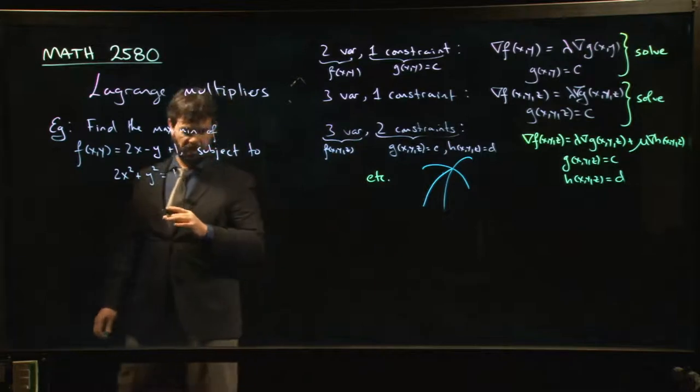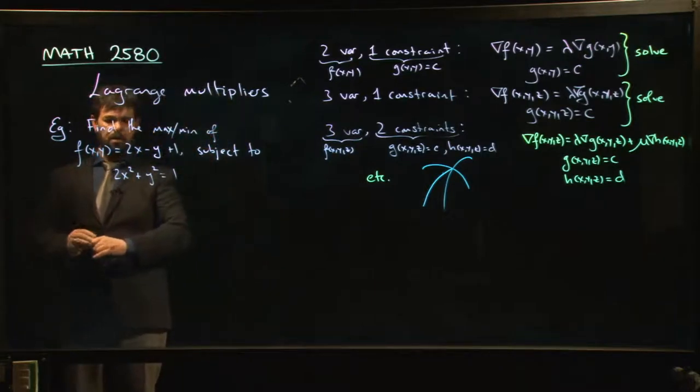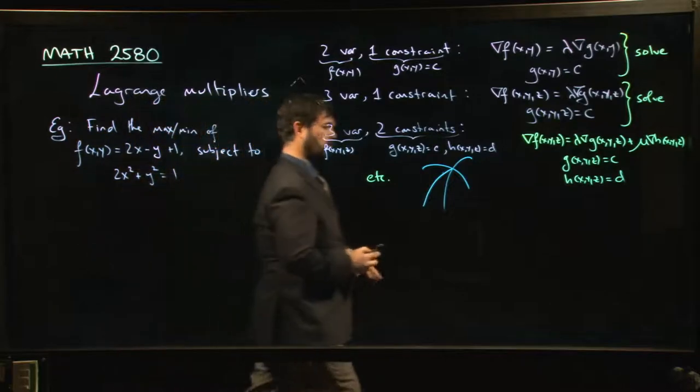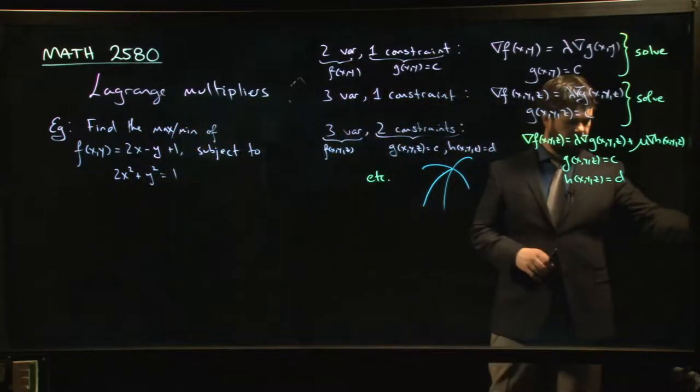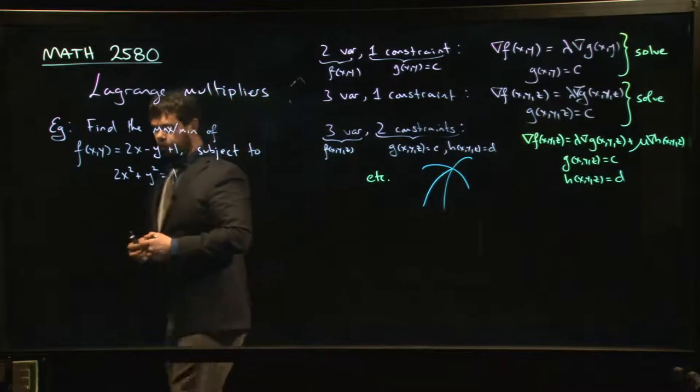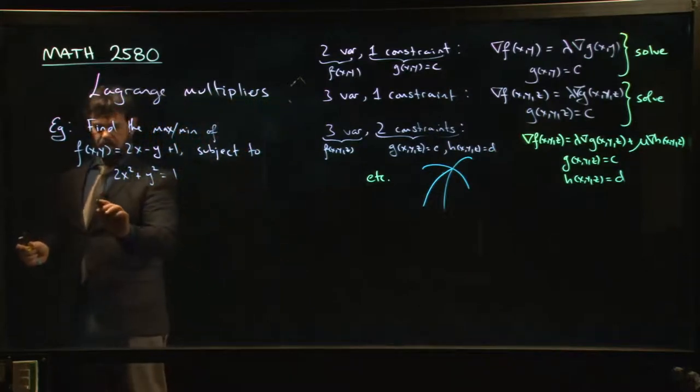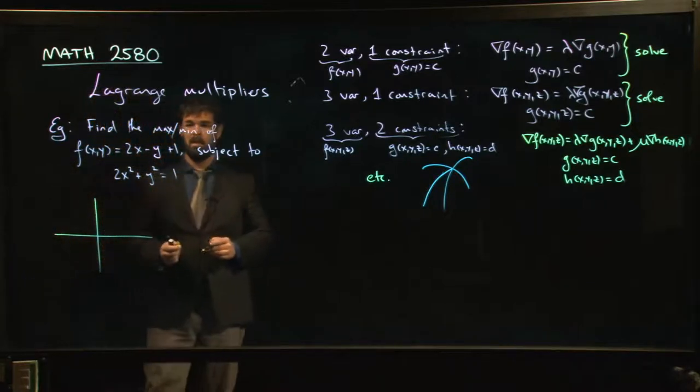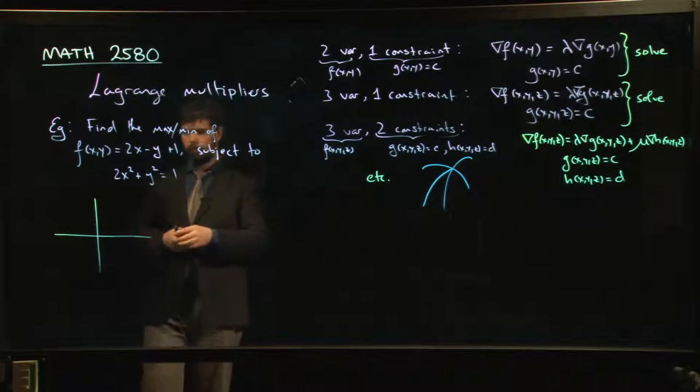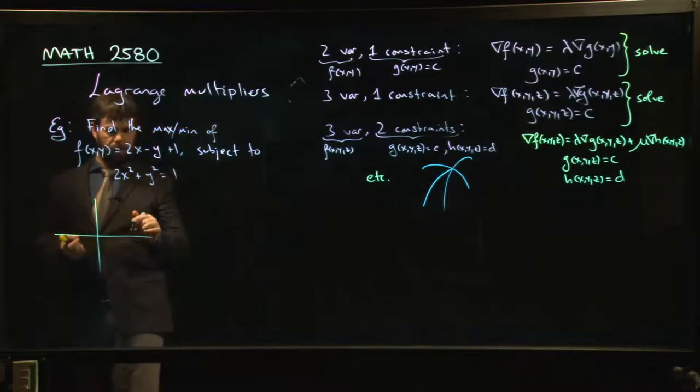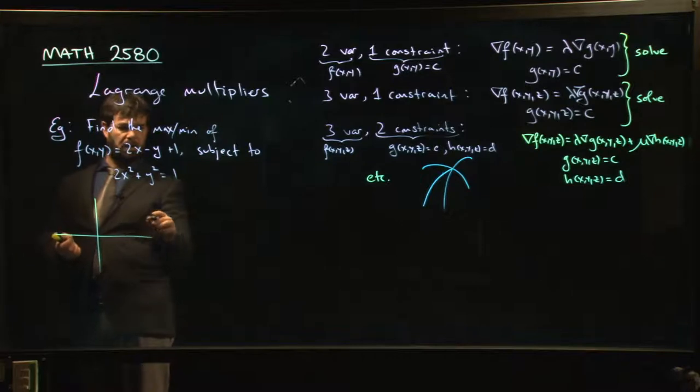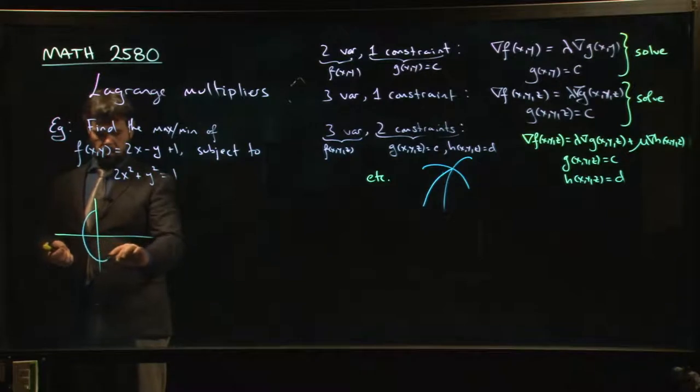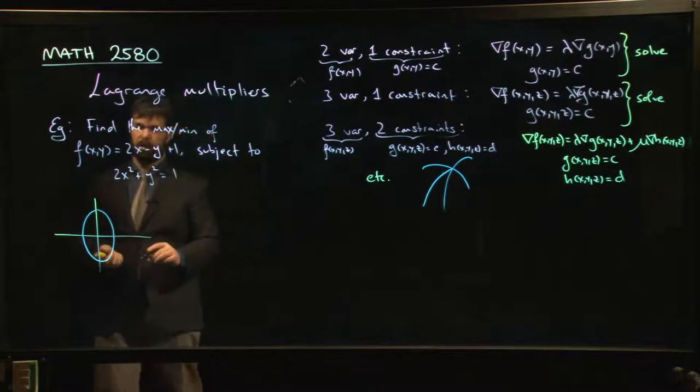Two variables, one constraint. Now, let me draw the problem out for you. I think it's important to sort of see what's going on visually when you're doing Lagrange multipliers before you dive into the algebra because the algebra can get ugly. Here's my coordinate plane. Let me draw my constraint curve. My constraint is an ellipse. And it's an ellipse which looks something like that. So there's my constraint curve.